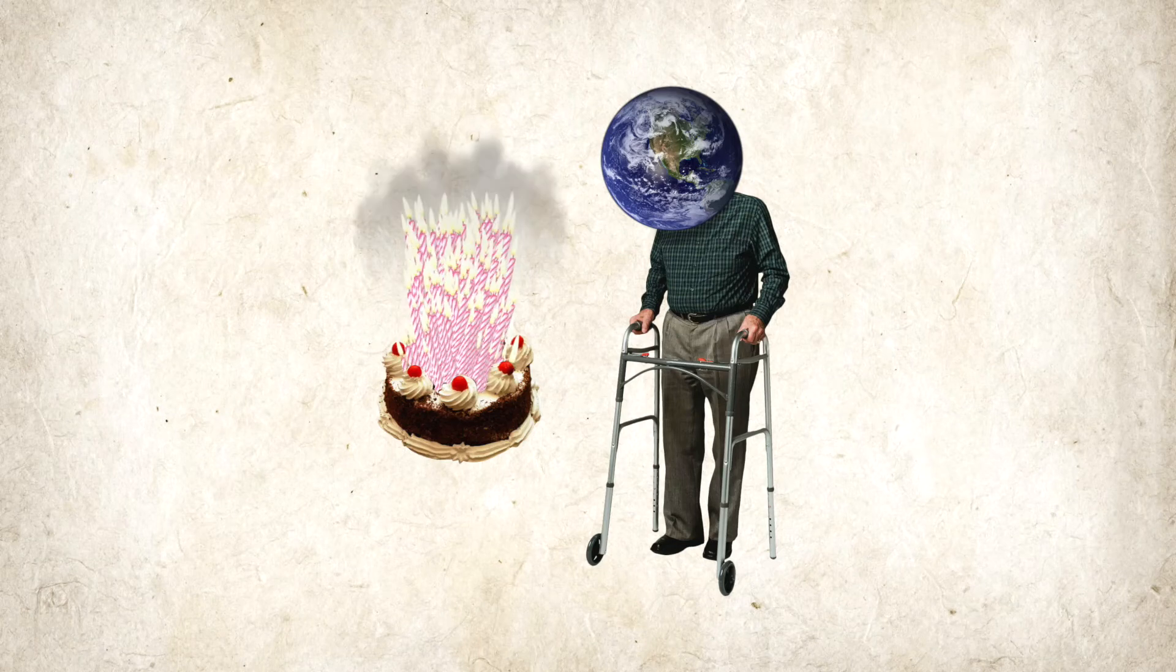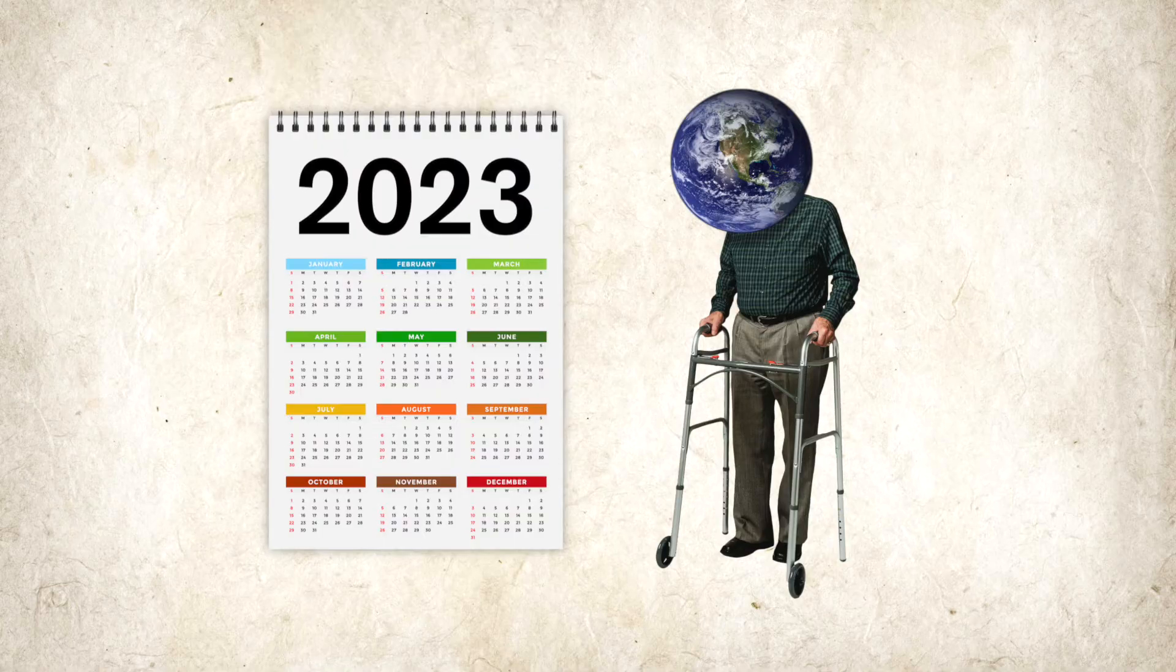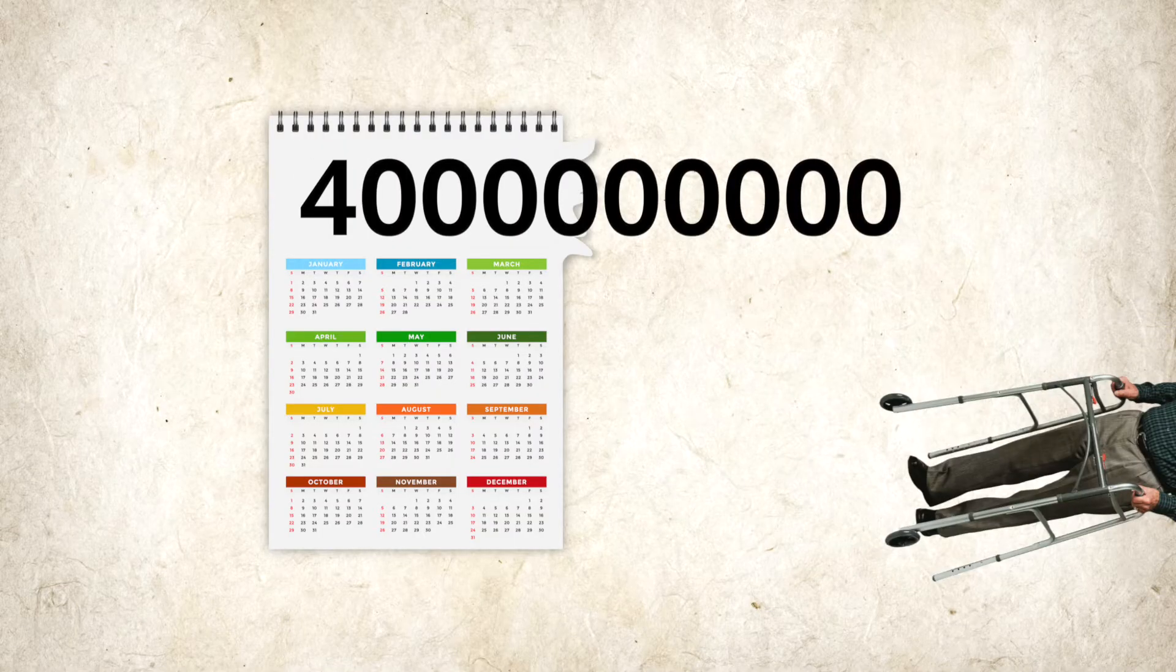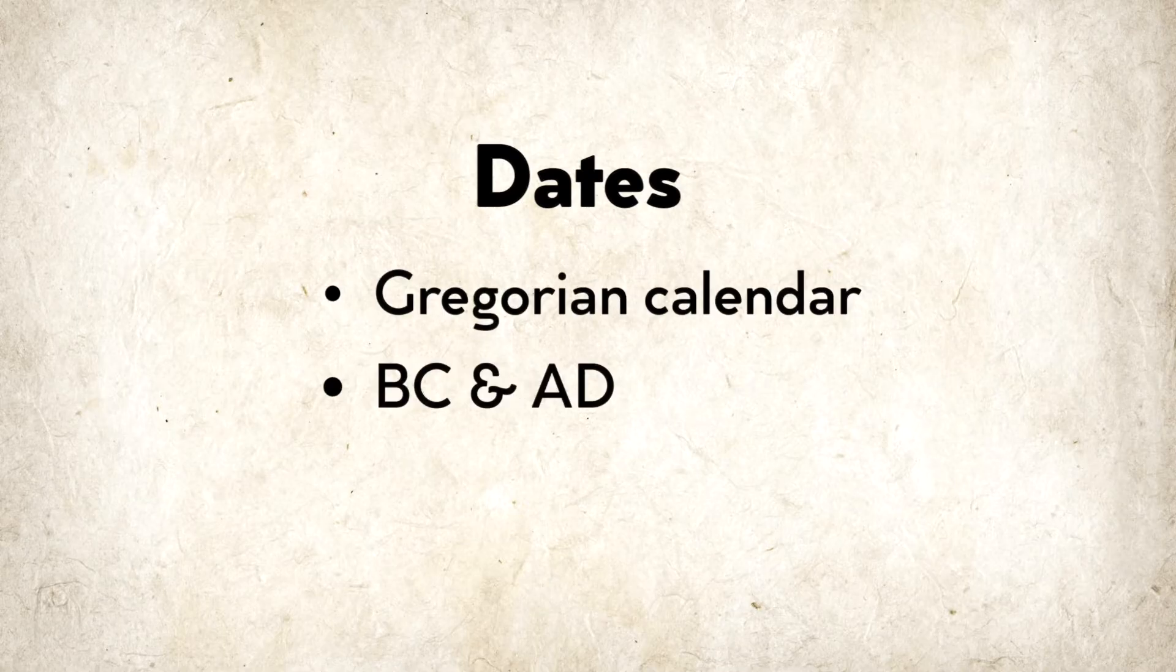The world is over 4 billion years old, so why do we say the year is something like 2023 instead of 4 billion? It doesn't make sense! Well, actually I lied, it does make sense to me and that's why I made this video to explain dates, including the Gregorian calendar, BC and AD, and BCE and CE.